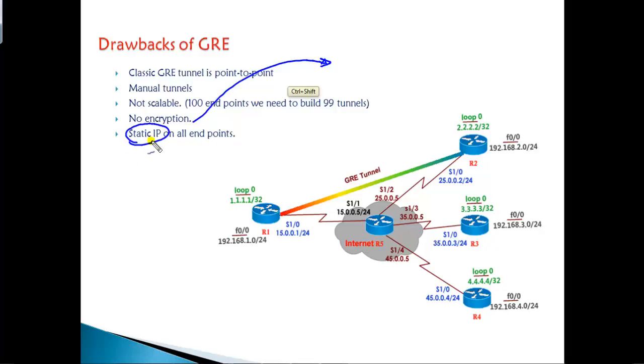Apart from that, there's one more thing: we need to have a static IP address on each and every point. Especially if you're using internet connections, we're going to build logical point-to-point connections from this point to this point, and these IP addresses have to be static.